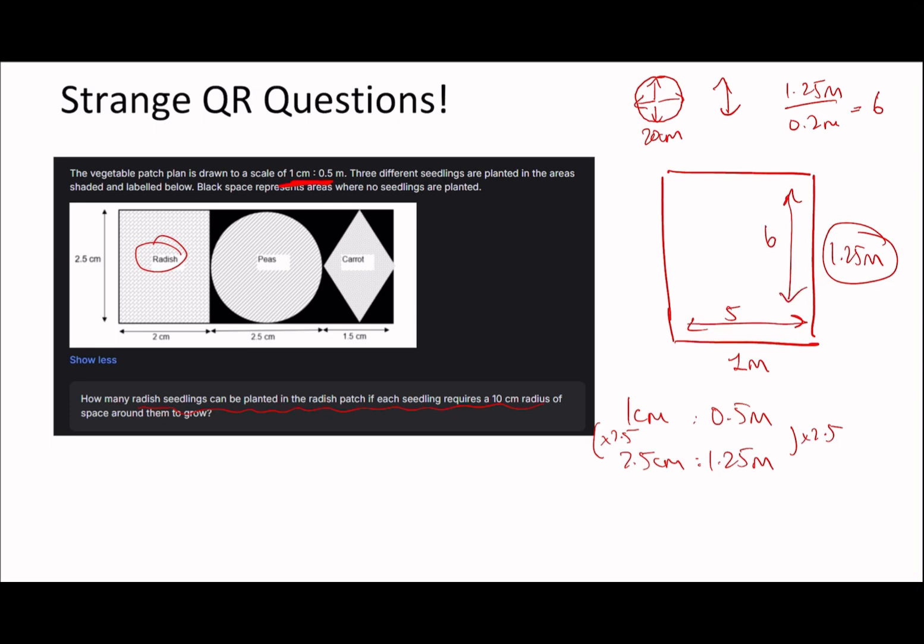So you can fit 6 full ones. Therefore, up and down, you can fit 6. You can fit in 6 rows and 5 columns. So therefore, the total amount of radish seedlings that can be planted is 6 times 5, which is 30. The key idea here is understanding the scale factor and understanding that a 10cm radius seedling will basically be 20cm in both areas. Great. Let's go on to the next question then.